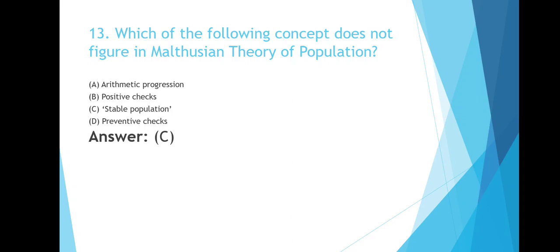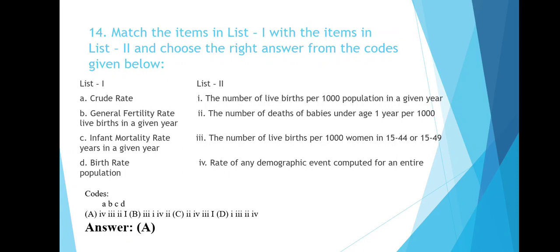Match the list — items in List 1 with List 2. Crude rate: rate of any demographic event computed for an entire population. General fertility rate: number of live births per 1000 women aged 15 to 44 or 15 to 49 in a given year. Infant mortality rate: number of deaths of babies under age 1 per 1000 live births in a given year. Birth rate: number of live births per 1000 population in a given year.